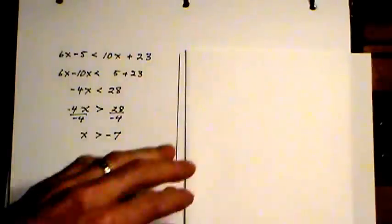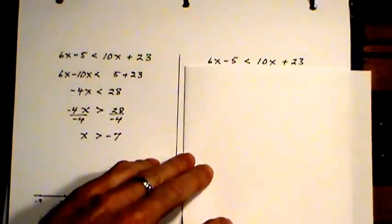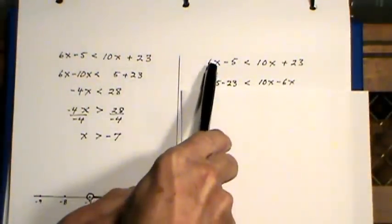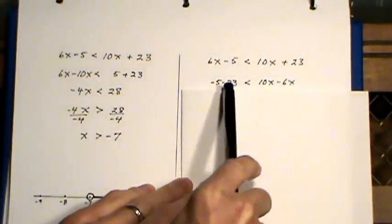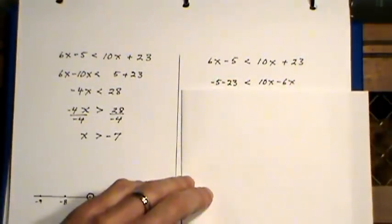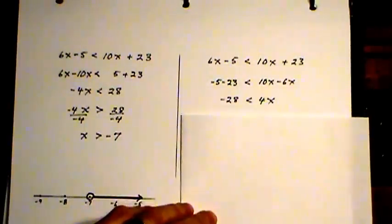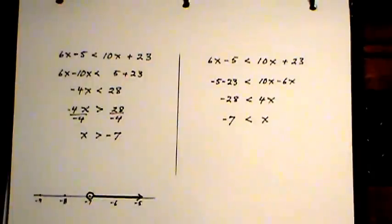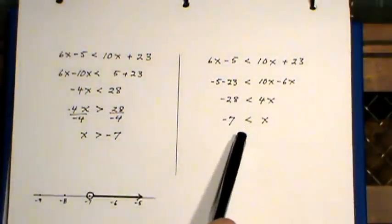Just to show you an alternate way of doing this, I took the same equation and I moved the 6x over here, subtracted 6x, brought the 23 over to this side. It's negative 23. This time, I have a positive 4 in front of the x. So this time, when I divide by 4, I do not change the direction of that inequality. And you see, I got the same answer both times. x is greater than negative 7.